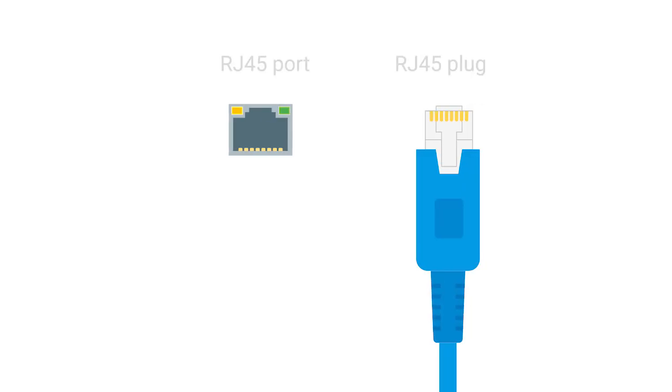The final steps of how the physical layer works take place at the endpoints of our network links. Twisted pair network cables are terminated with a plug that takes the individual internal wires and exposes them. The most common plug is known as an RJ45, or Registered Jack 45. It's one of many cable plug specifications, but by far the most common in computer networking.